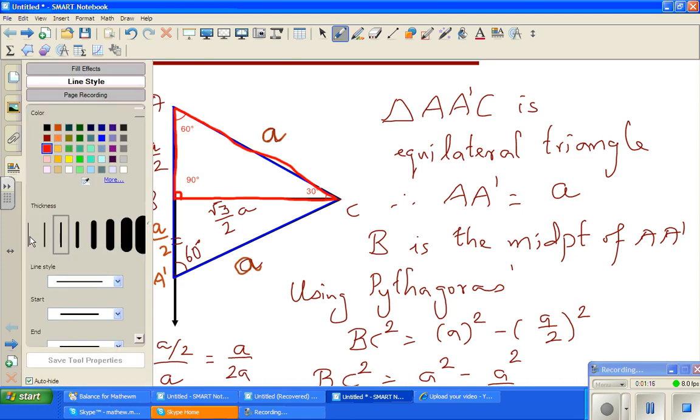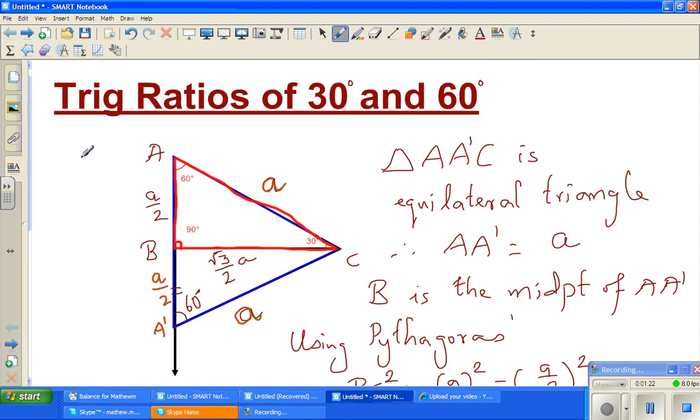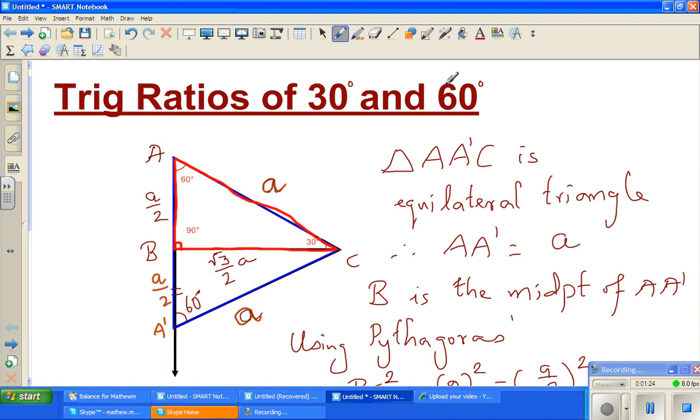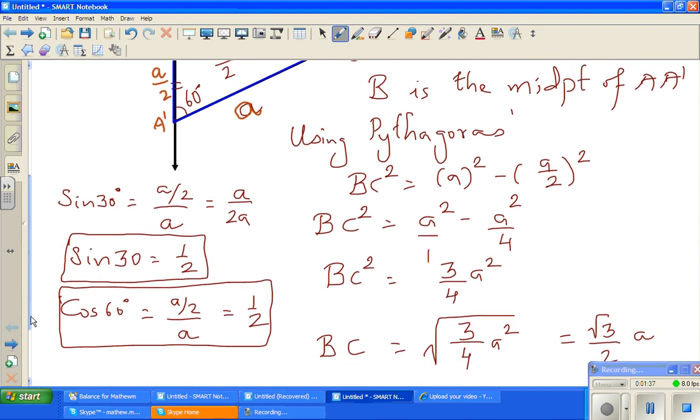We wanted to prove sin 30° and we want to find the trig ratios of 30° and 60°. So sin 30° we saw is A/2 divided by A, which equals 1/2, and cos 30° is A/2 divided by A.